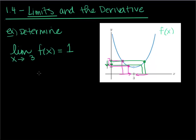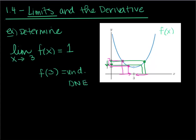Notice: limits are very, very different than actual function values. If I asked you what is f of 3 — meaning not as I get close to 3, but what is my actual function value when x is equal to 3 — see how this function right here has that little hole? That means that my function is undefined at that point. So we would say either undefined, or DNE, which means does not exist. The difference is that limits allow us a method for describing the behavior of a function as I approach an x value — not what happens at the x value, but what happens as we get really, really close to 3. What is happening to my function values? They are getting closer and closer to 1.